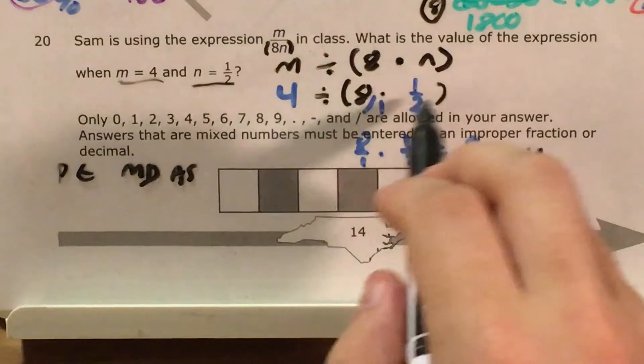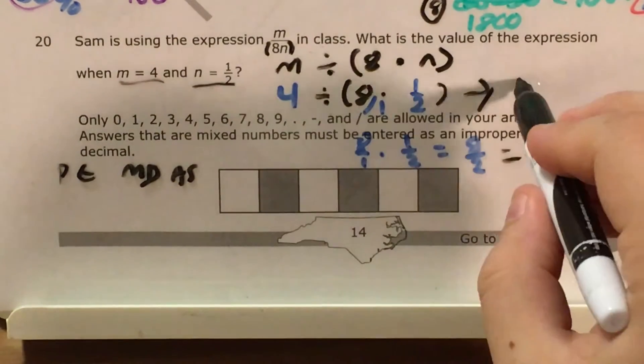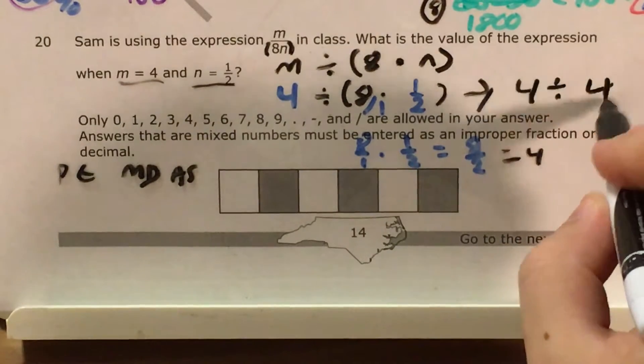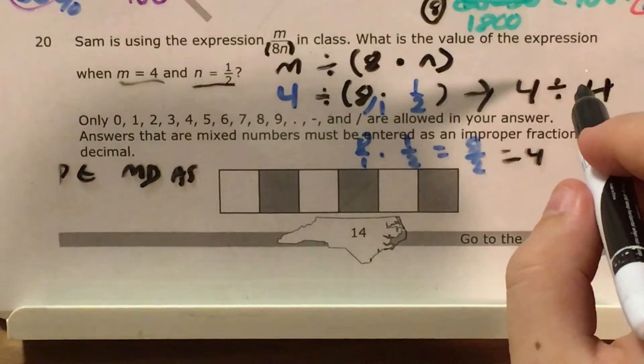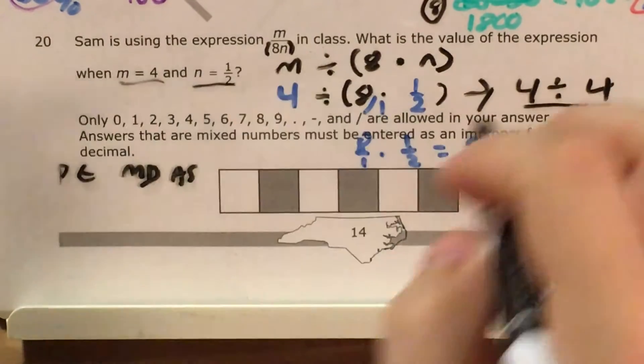So now that I've evaluated this entire set of parentheses to be equal to 4, this expression now becomes 4 divided by 4. And this one, this is a doozy. The answer is 1.